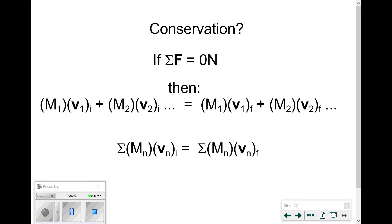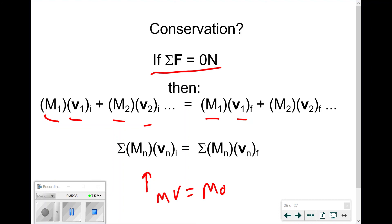Since the total of mass times velocity does not change for the entire group, we have a conservation law — conservation means the total remains constant. This quantity, mass times velocity, is actually equal to what's known as momentum. The concept of center of mass lays the foundation for every conservation law we work with.